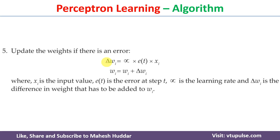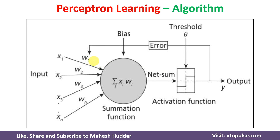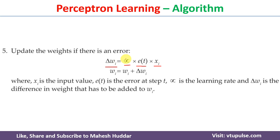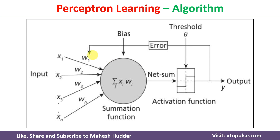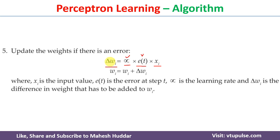The question is how to update the weights. To update the weights, we use this equation: first we calculate the change in weight, delta_wi, which is equal to the learning rate multiplied by the calculated error multiplied by the input xi. So if you want to modify w1, delta_w1 = learning_rate × error × x1, and similarly for w2 using x2, and so on. Once you calculate delta_wi, the new weight is: wi = wi (old weight) + delta_wi.